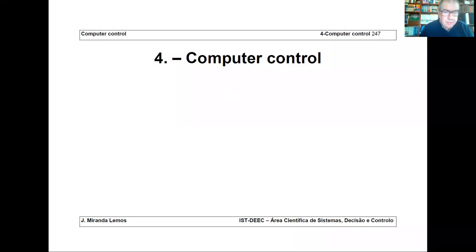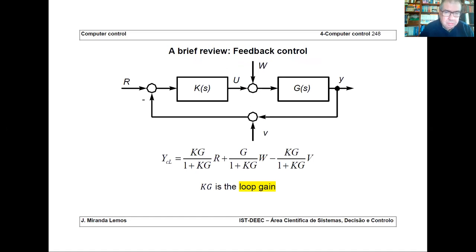Good morning. This lecture is the first one of the second part. In the second part, we are going to study a number of computer control strategies and how to design controllers for systems interconnected with a controller. We are going to use the models that we have studied in the first part to design controllers. For simplicity, let's consider this in continuous time, although I could replace s by z and the conclusions would be the same in discrete time.